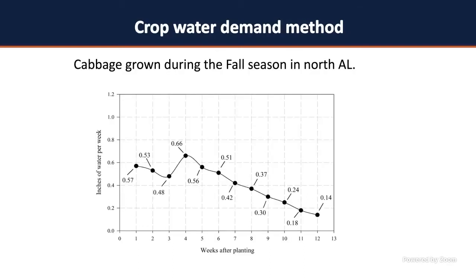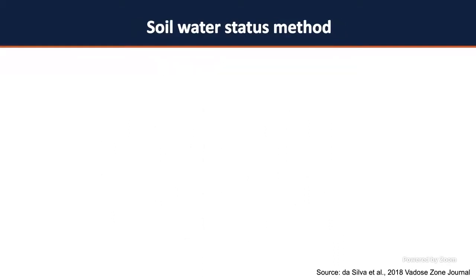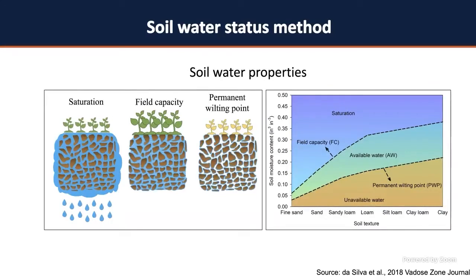The fourth method — the soil water status method — is a bit more complicated. You need to apply water based on your soil characteristics: saturation, field capacity, and permanent wilting point. Saturation means your soil is full and cannot hold more water — you'll have leaching, and in heavy conditions, erosion or runoff. This usually happens after heavy rainfall events.